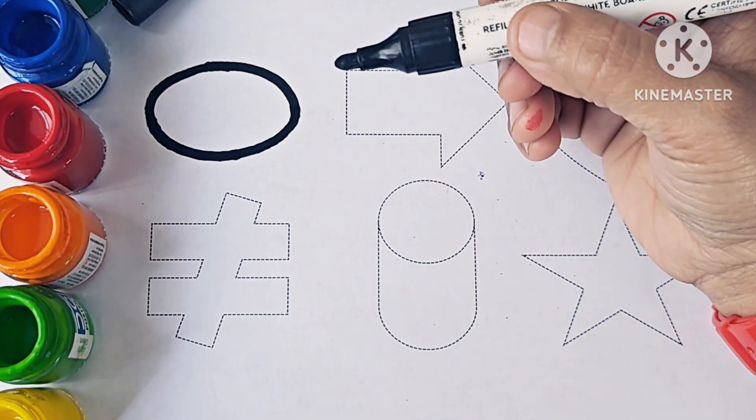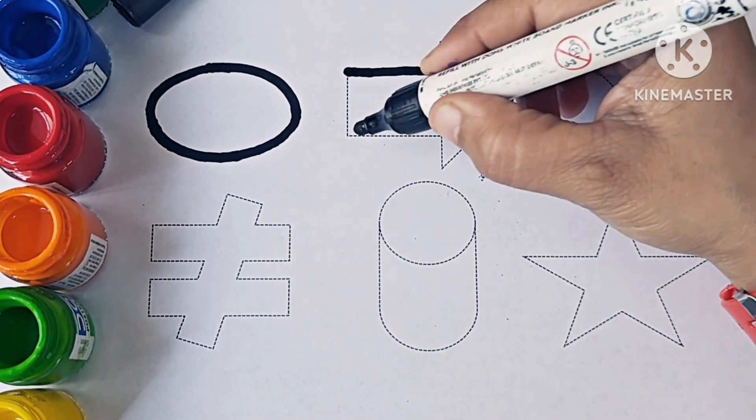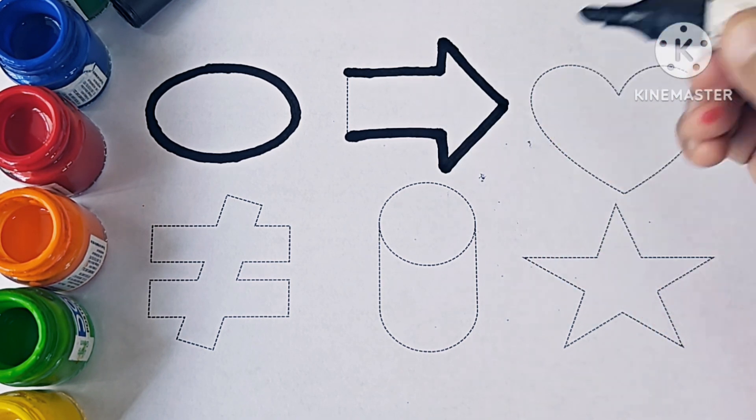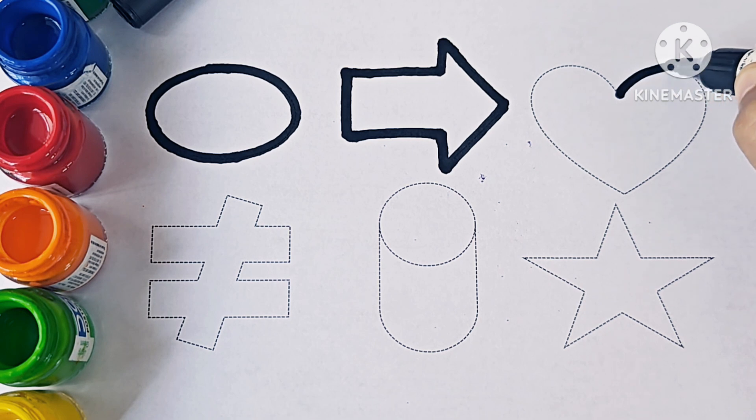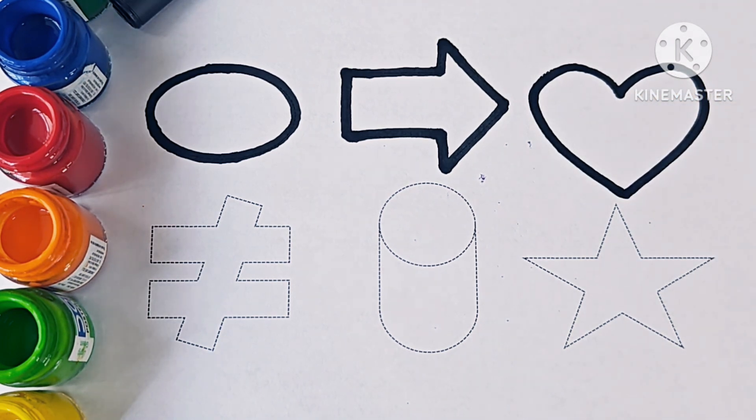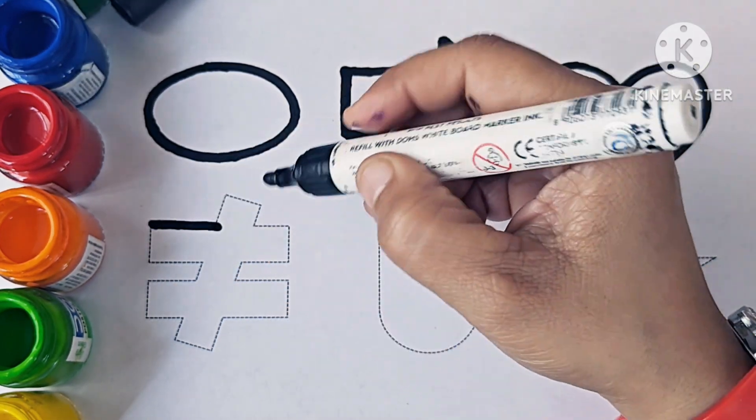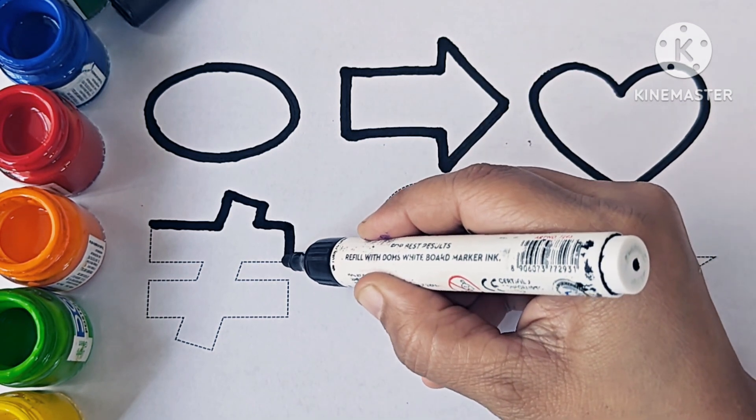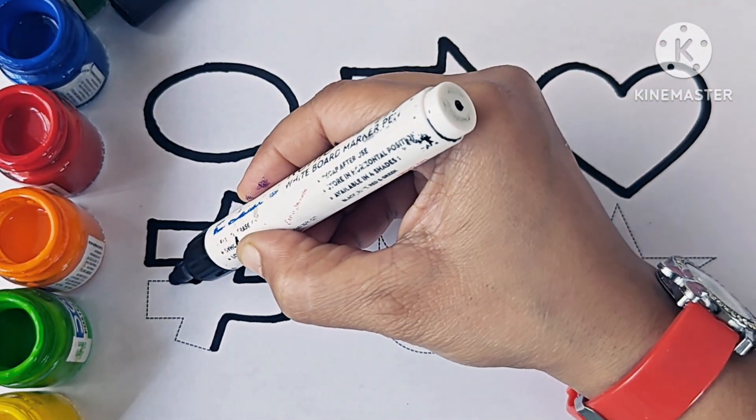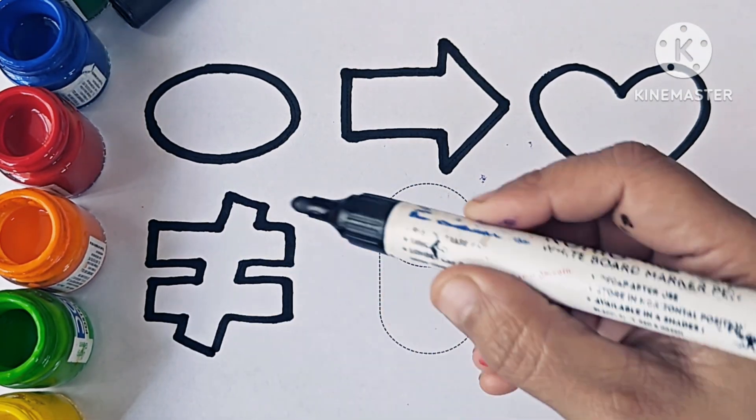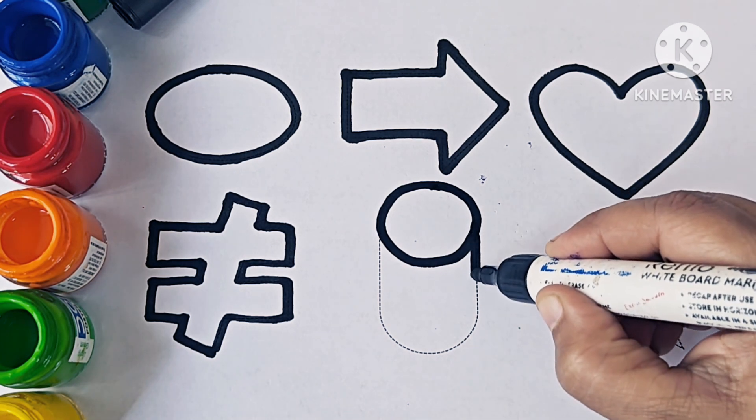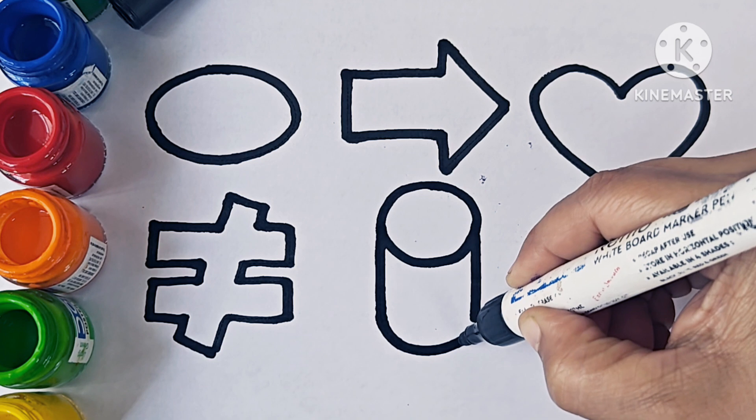Oval. Right arrow, yellow color. Heart. Not equal to symbol. Cylinder.